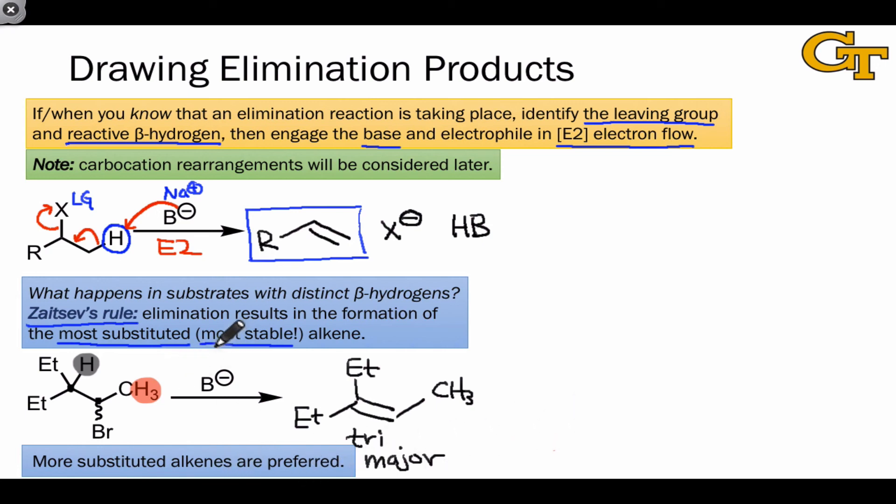More substituted alkenes are the preferred products in elimination reactions. Thinking about Zaitsev's rule from a general angle, using this idea of thermodynamic stability as what's really at the root of Zaitsev's rule, also helps us understand another issue of eliminations that you may not have thought of: the issue of trans and cis products.